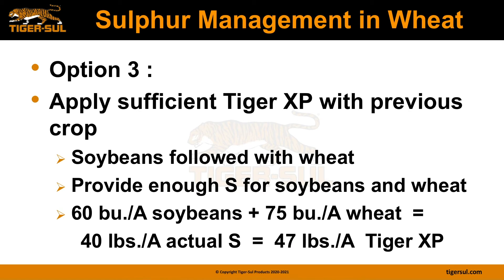Option three is to apply sufficient Tiger XP ahead of the previous crop. For example, if you have soybeans followed by wheat, provide enough sulfur for both crops. If you're anticipating 60 bushels per acre of soybeans, that would equate to 40 pounds of actual sulfur per acre, which converts to 47 pounds per acre of Tiger XP. That would be sufficient for two crops. The oxidation process of Tiger XP is gradual, not sudden, so you will have carryover — and with that carryover, you can benefit the wheat crop.